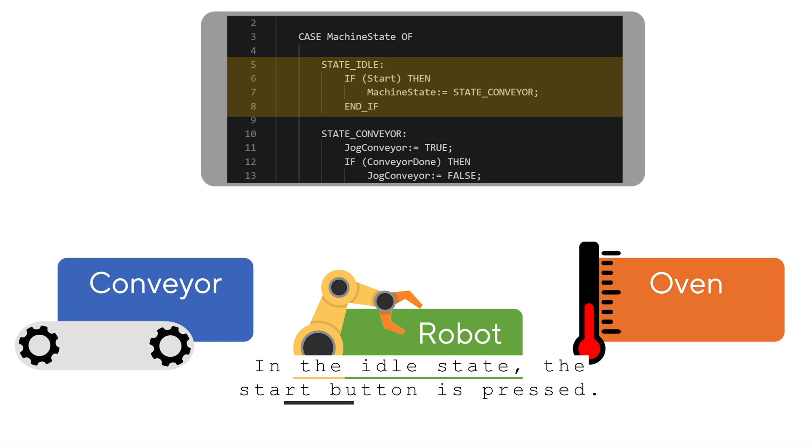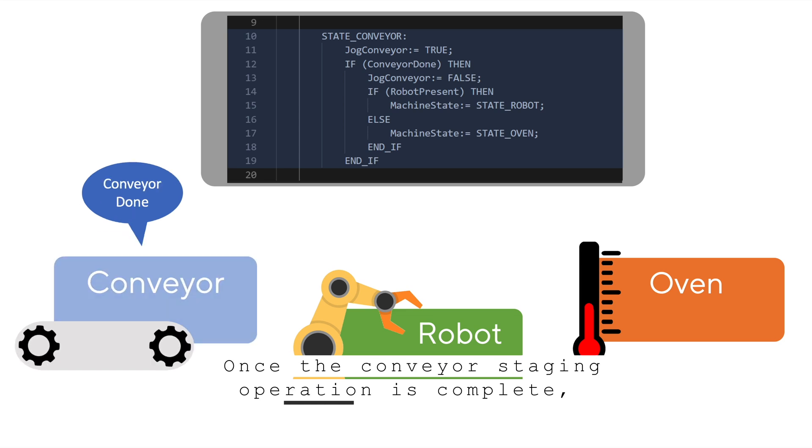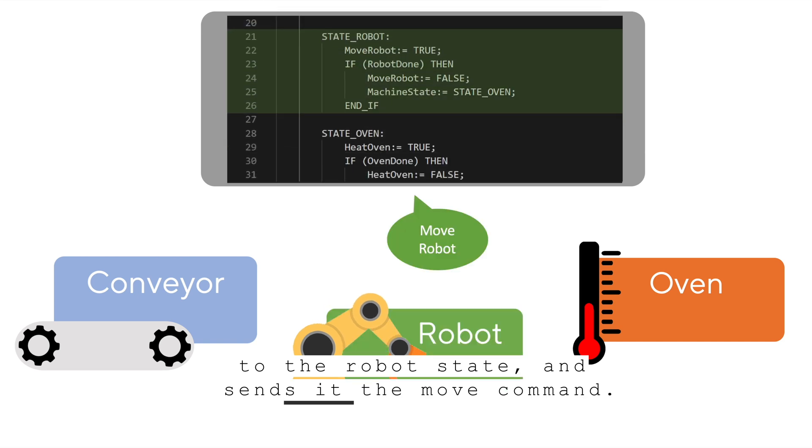In the idle state, the start button is pressed. The machine manager then transitions to the conveyor state, and the signal to start the conveyor is sent out. Once the conveyor staging operation is complete, the machine manager transitions to the robot state and sends it the move command.